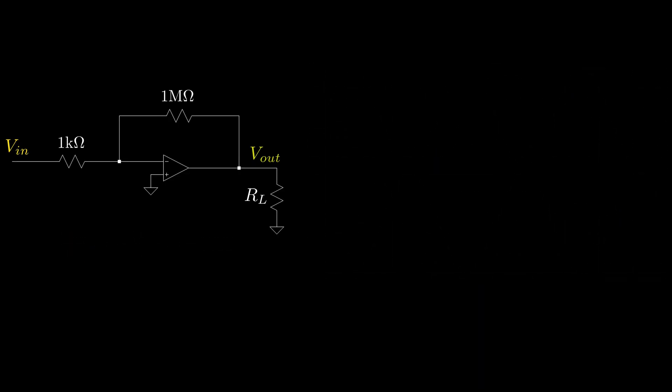What happens if we attach a load resistor to the output? Well, it depends on if our op-amp is ideal or not. If it is ideal, the op-amp can source or sink an infinite amount of current, as the output is modeled as an ideal voltage source with zero output impedance.